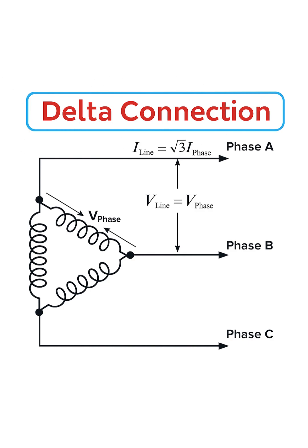The key feature of a delta connection is that the coils are connected end-to-end, forming a closed loop that looks like a triangle, or the Greek letter delta. Unlike a star connection, there is no central neutral point.